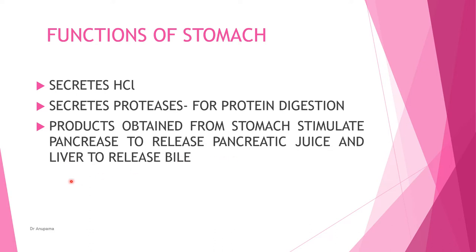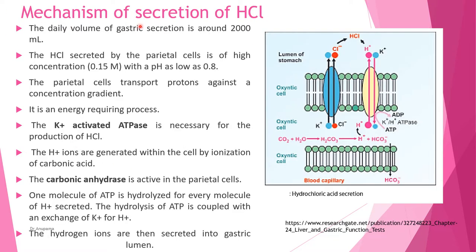The stomach products also stimulate the liver to release bile. Regarding the mechanism of secretion of HCl: a daily volume of gastric secretion of around 2000 ml, which is 2 liters, takes place. HCl is secreted by the parietal cells in high concentrations of over 0.15 moles, and the pH goes down to around 0.8. These parietal cells are involved in the transport of protons against a concentration gradient.